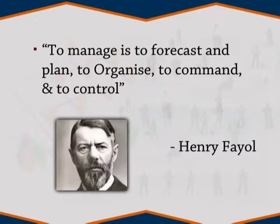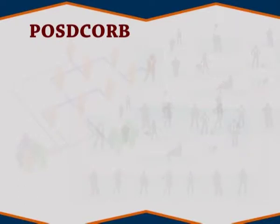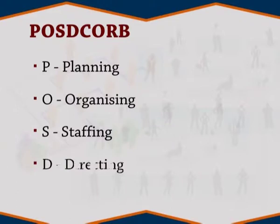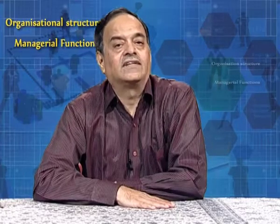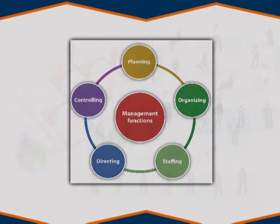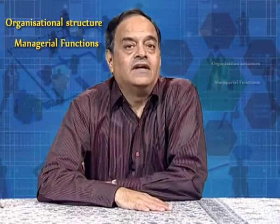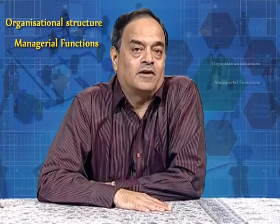According to Henry Fayol, to manage is to forecast and plan, to organize, to command and control. Whereas Luther Gulick has given the keyword POSDCORB: P for planning, O for organizing, S for staffing, D for directing, CO for coordination, R for reporting, and B for budgeting. The most widely accepted functions of management are given by Koontz and O'Donnell: planning, organizing, staffing, directing, and controlling. For theoretical purposes it may be convenient to separate the functions of management, but practically these functions are overlapping in nature — they are highly inseparable. Each function blends into the other and each affects the performance of others.